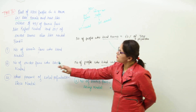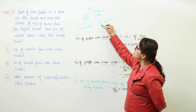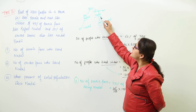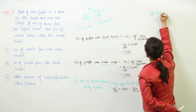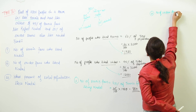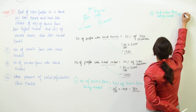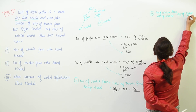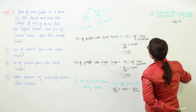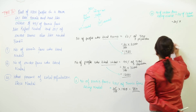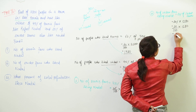The second part of the question asks us to find out the number of cricket fans who liked Nadal. Only 20% of the cricket fans liked Nadal. So the number of cricket fans liking Nadal is 20% of the cricket lovers, which is 20 upon 100 into 1280, giving us 256.